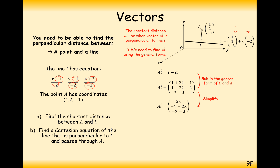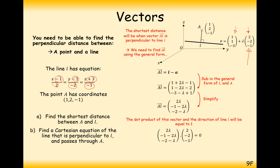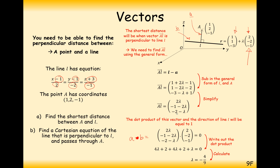That is how we get from A to any point on the line for a specific value of lambda. Now that we have the direction from A to L, we use the dot product with the direction vector of the line, setting a dot b equal to 0. This vector is a, and the direction vector is b. We expand the brackets and when we solve that, we get lambda equals minus 4 over 9. So for lambda equals minus 4 over 9, the distance from A to L is at its shortest.